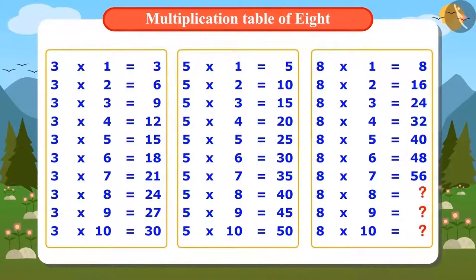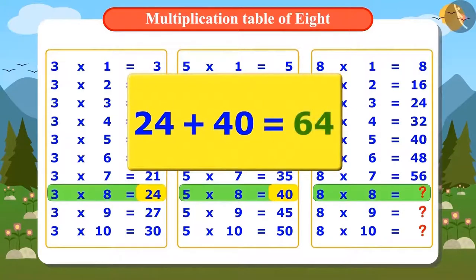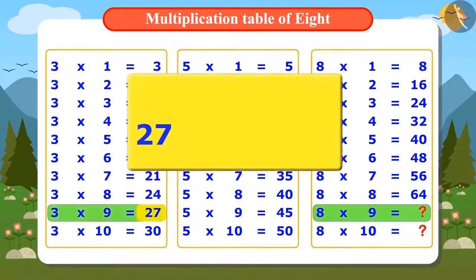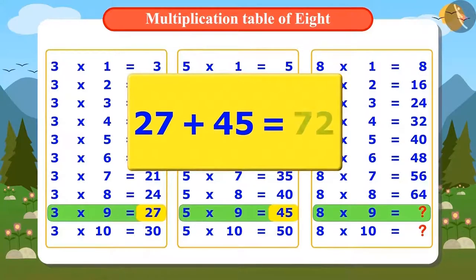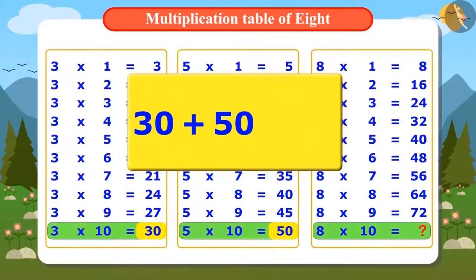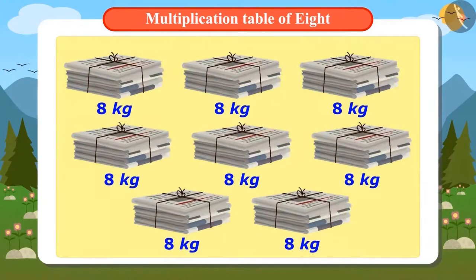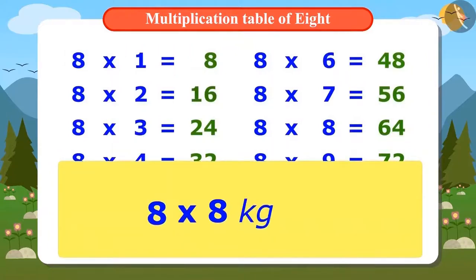Vandana has calculated up to 7 times 8 in the table. To find 8 times 8, we add 8 times 3 and 8 times 5 — that is, 24 and 40 — giving us 64. To find 9 times 8, we add 27 and 45, giving us 72. For the last number in the table, 10 times 8, we add 30 and 50, giving us 80. Vandana has now written down the entire multiplication table of 8. You can check whether the table you wrote is the same.